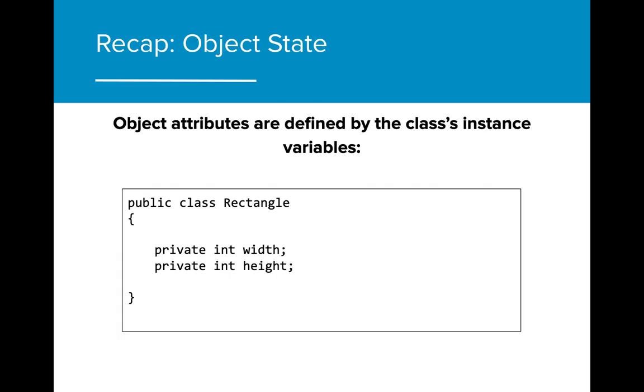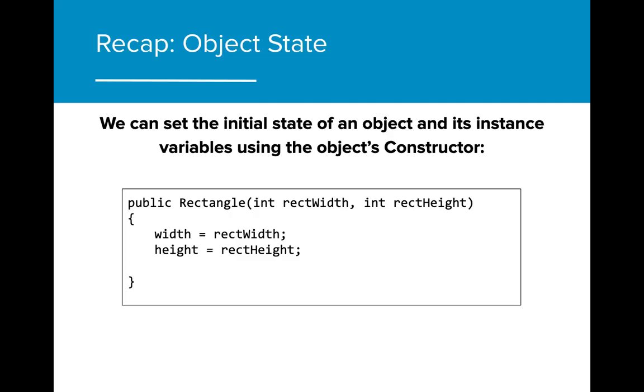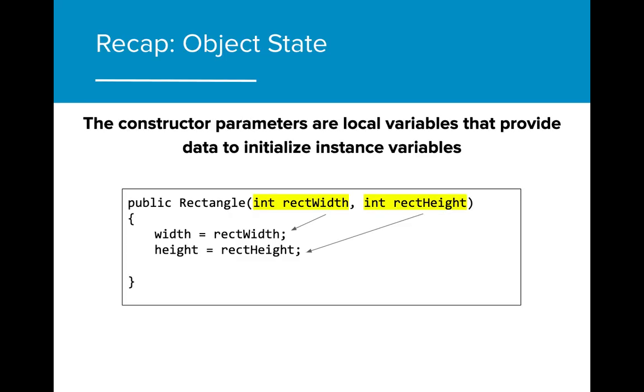An object's attributes are defined by the class's instance variables. All instance variables should help define the attributes that make up a class object. We can set the initial state of an object's attributes through a constructor. Using the formal parameters of the constructor, we can take in actual parameters that are copied into the constructor as local variables and initialize the values of a class's instance variables.